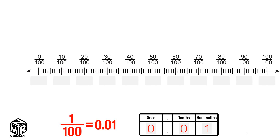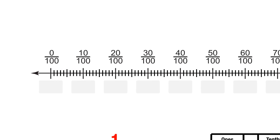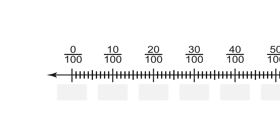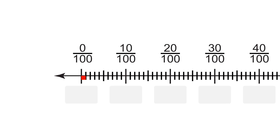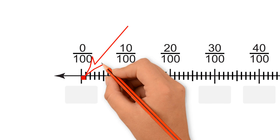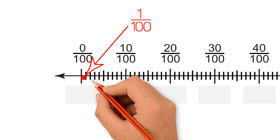Let's take a look at this number line. This number line is a whole divided into 100 parts. Each part represents a hundredth. The first point to the right of zero hundredths is one hundredth. Let's write one hundredth in two ways: as a fraction and as a decimal.